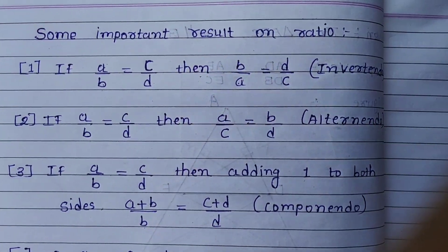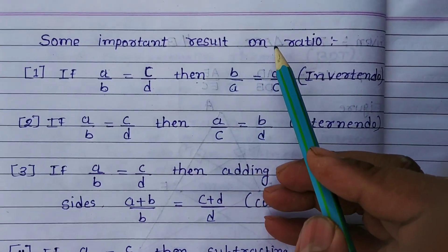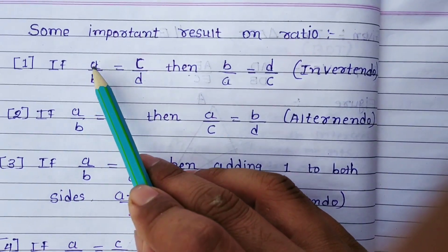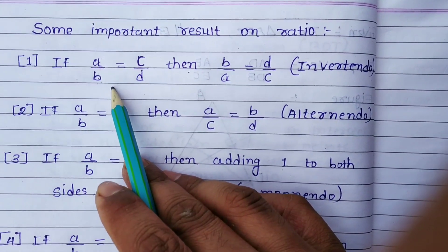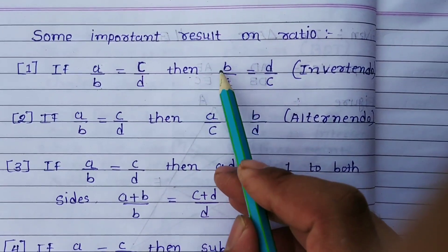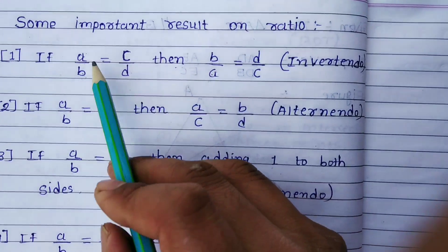Good morning. In this video we are going to see some important results on ratio. So first one: if a upon b is equal to c upon d, then b upon a is equal to d upon c.